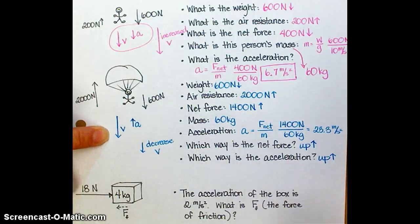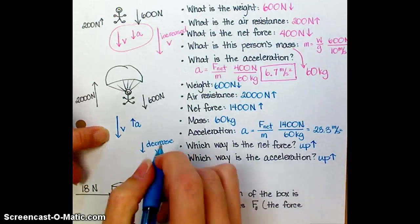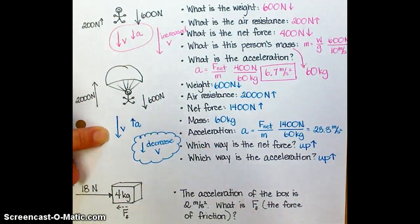And so what that's going to wind up doing is decreasing his velocity. The acceleration acting upward—you can just kind of think of it as counteracting his motion, working to slow him down. So his velocity, when he pulls the parachute, is actually going to decrease.